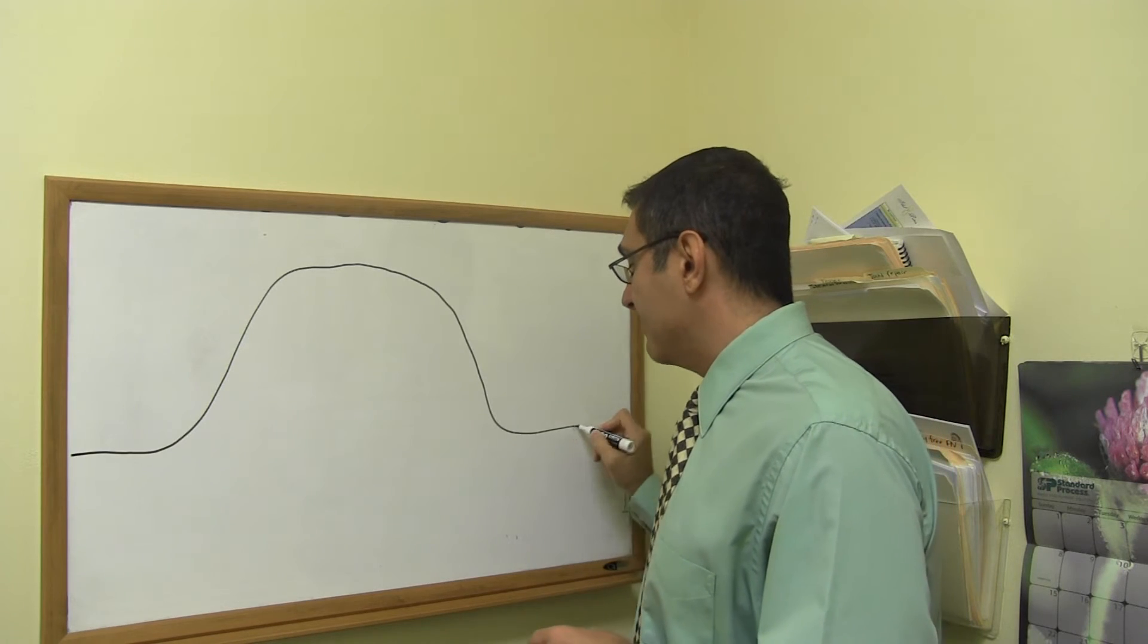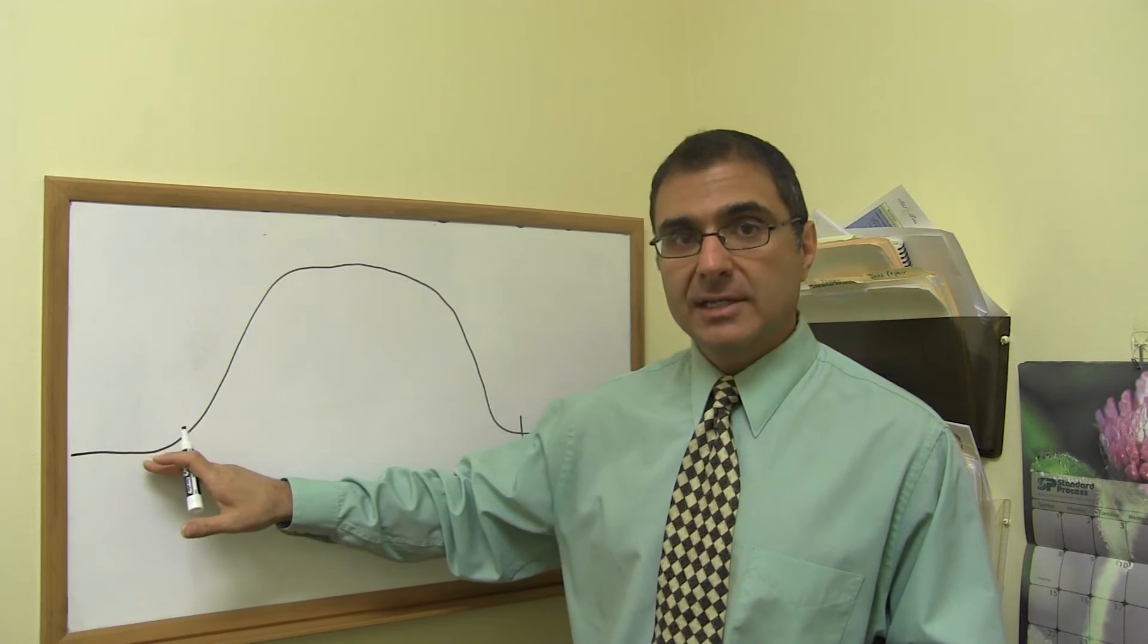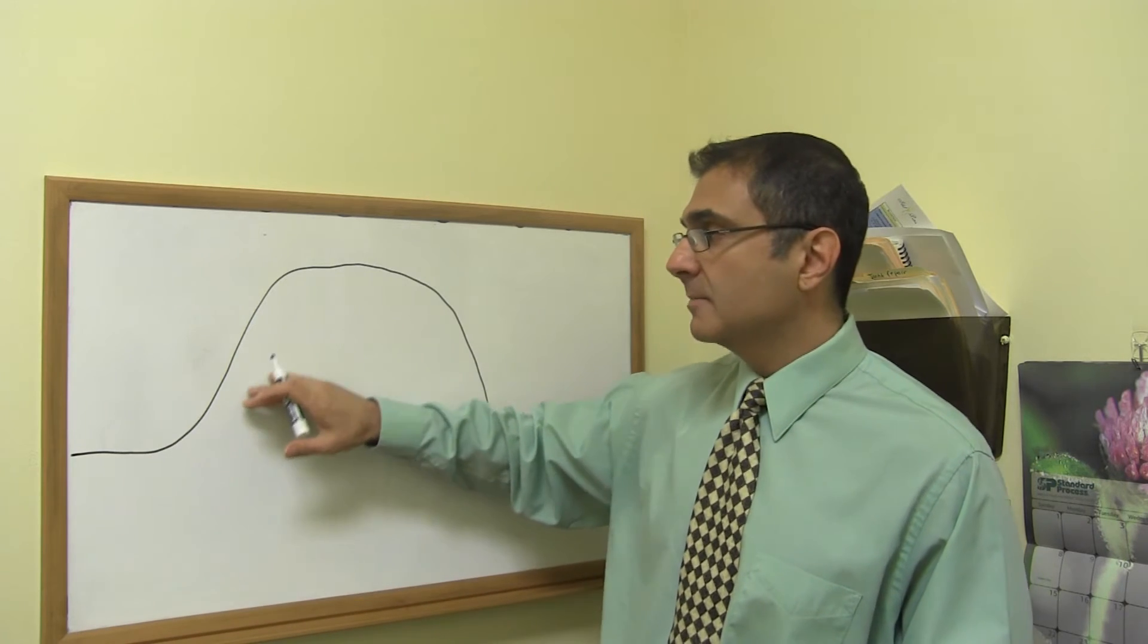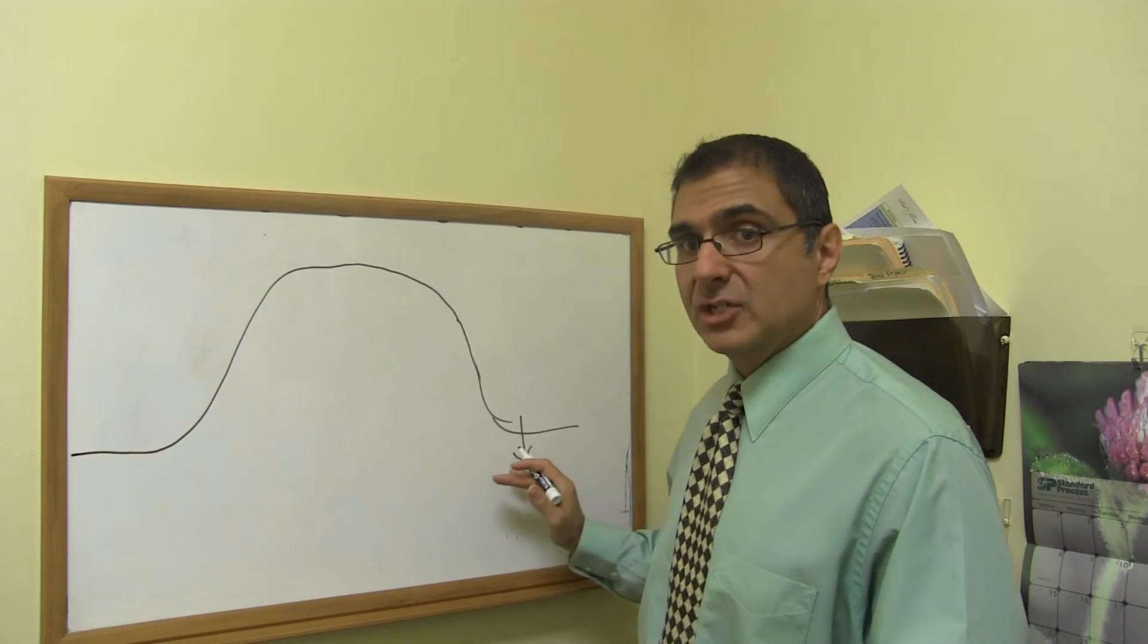And then towards the end of the month, progesterone drops and then menstruation starts here. So when a woman has her period, the progesterone is low. It comes up. Middle of the month it's high and then it starts to fall and then we get menstruation.